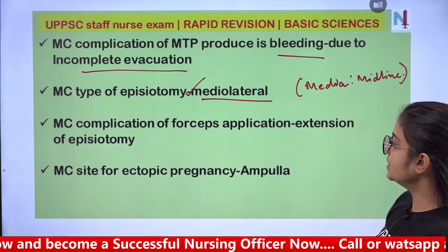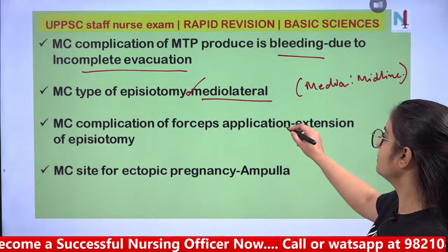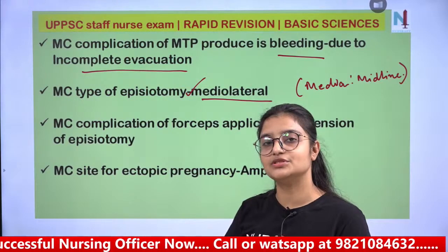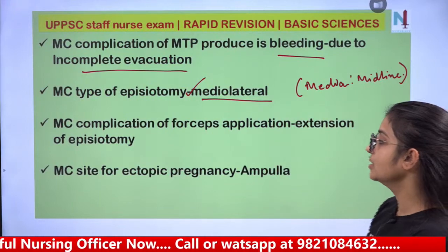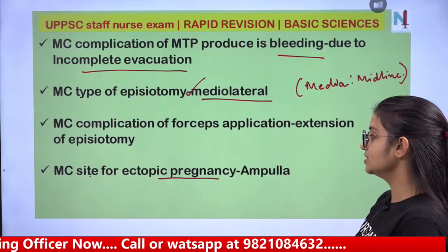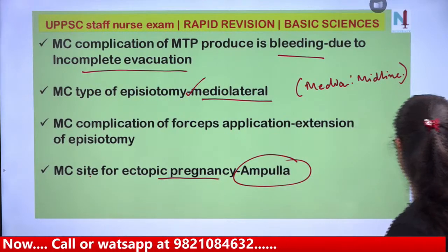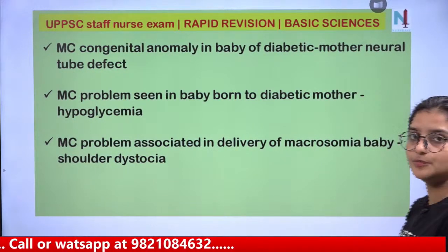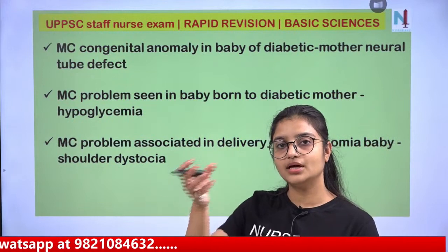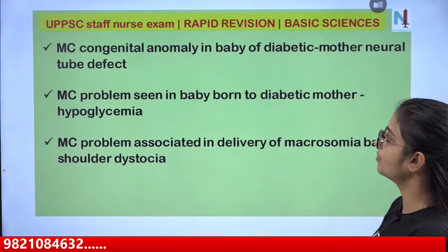The most common complication of forcep application is extension of episiotomy. The most common site for ectopic pregnancy is the ampulla, which is a part of the fallopian tube (infundibulum, ampulla, then isthmus).